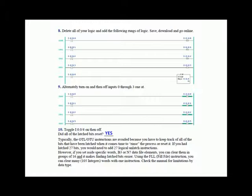However, instead, if you set aside specific words in B3 or N7 for latches, you can then clear them in groups of 16, which makes finding the latched bits easier. Using the fill file instruction, you can clear as many as 105 integer words in one instruction in the little processor. So you could latch 105 times 16 bits, and then with one fill file instruction, fill all 105 integers with zeros. You need to check the manual for limitations by data type, as the fill file varies by data type and by processor, and some larger processors can execute the instruction against a larger file of words.